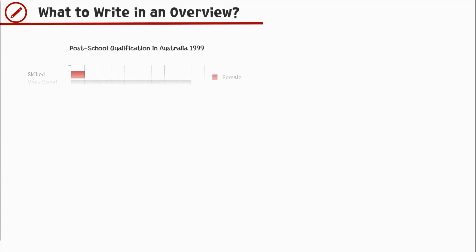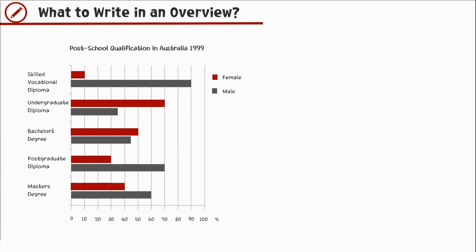It is a band 9 introduction because paraphrasing was used effectively without omitting information from the original heading. Now, let us take a look at our chart and understand what to write in an overview. In the chart, red is female and gray is male. The highest figure is in the category skilled vocational diploma, and male dominated this qualification. In the same category, female got the least. Additionally, more women have undergraduate diploma than male, and more males have postgraduate diploma and master's degree.